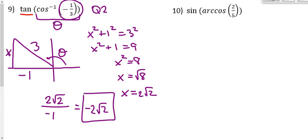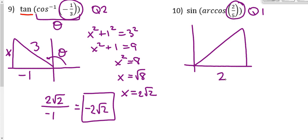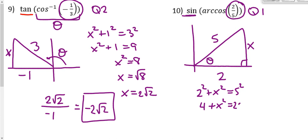The last one: the sine of the arc cosine of 2 fifths. Since 2 fifths is positive, we're in quadrant 1. Draw a reference triangle with 2 on the adjacent and 5 on the hypotenuse. We want the sine of angle theta, so we need the opposite side. Using the Pythagorean theorem: 2 squared plus x squared equals 5 squared, so x squared equals 21, and x equals square root of 21. The sine of the angle is opposite over hypotenuse: square root 21 over 5.